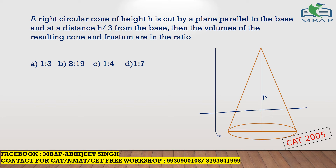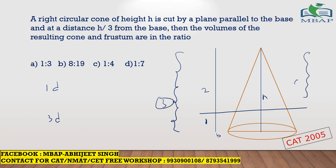The cut is at a distance H by 3 from the base. So if the total height is 3, this lower portion is 1 and the upper portion is 2. Height or length is a one-dimensional figure, so this is a question about one-dimensional change to three-dimensional change. They want the ratio of the resulting small cone on top to the resulting frustum below — so they want the ratio of these two volumes.